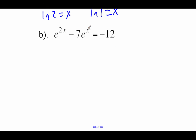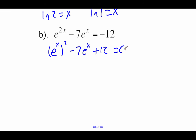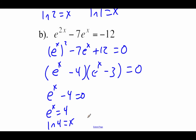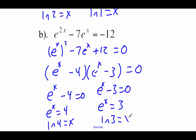The last example says e to the 2x minus 7 times e to the x equals negative 12. Rewrite in quadratic form as (e^x)² minus 7(e^x) plus 12 equals zero. Factoring — we need numbers that multiply to 12 and add to negative 7, so negative 4 and negative 3 — giving (e^x minus 4)(e^x minus 3) equals zero. From e to the x equals 4: x equals ln(4). From e to the x equals 3: x equals ln(3).